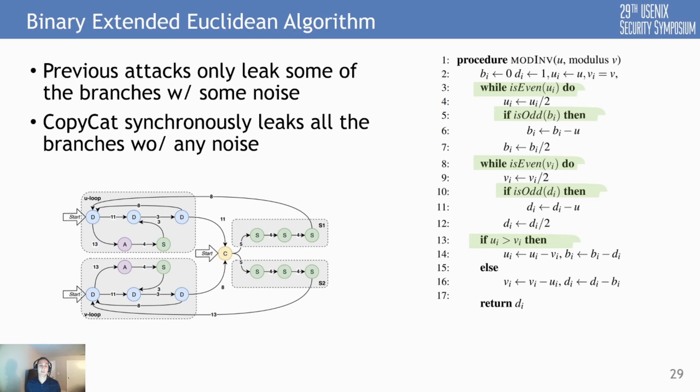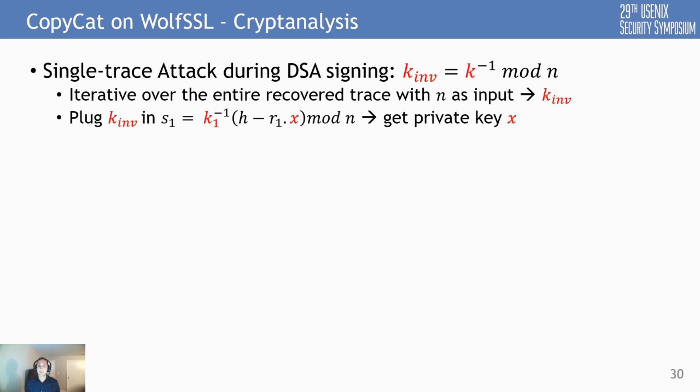This modular inverse function is used in many different places. The DSA signature generation algorithm uses it to compute the modular inverse during signature generation. We demonstrated a single-trace attack on DSA by iterating through the deterministic trace, computing the value of K inverse, and then simply computing the private key from the nonce K.